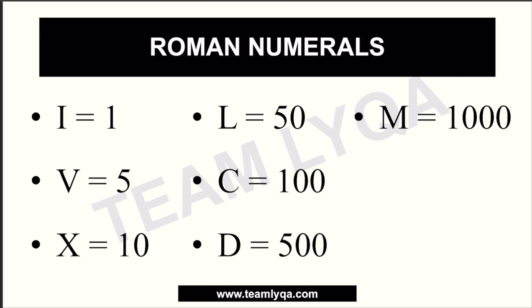These are the equivalents of each Roman numeral. I is 1, V is 5, X is 10, L is 50, C is 100, D is 500, and M is 1,000. The most commonly used ones are 1, 5, 10, 100, and L. M is used less often, but it still pays to remember it so we don't make mistakes on the exam.